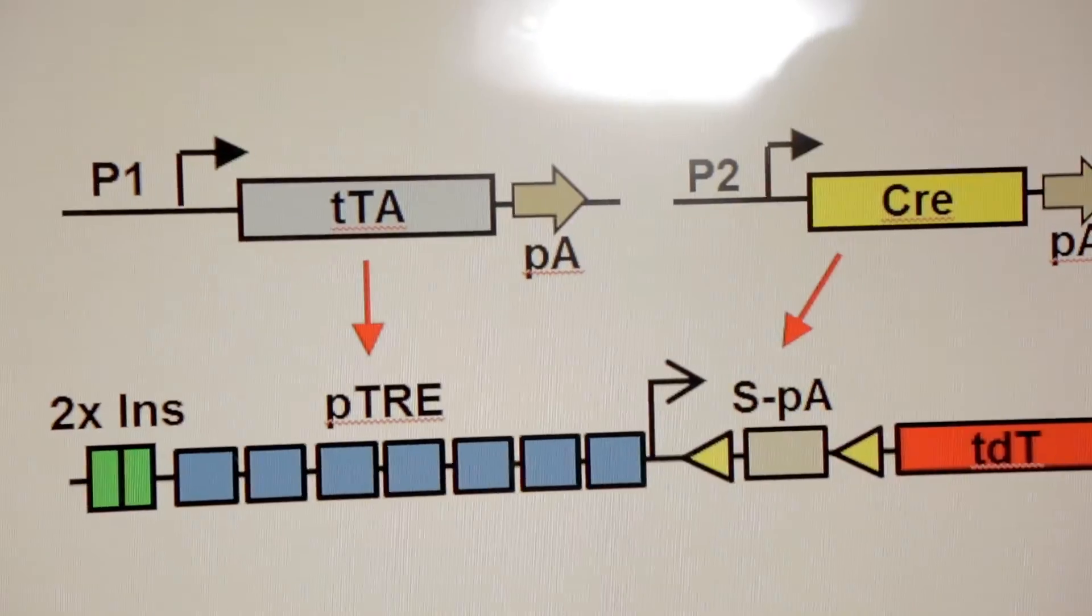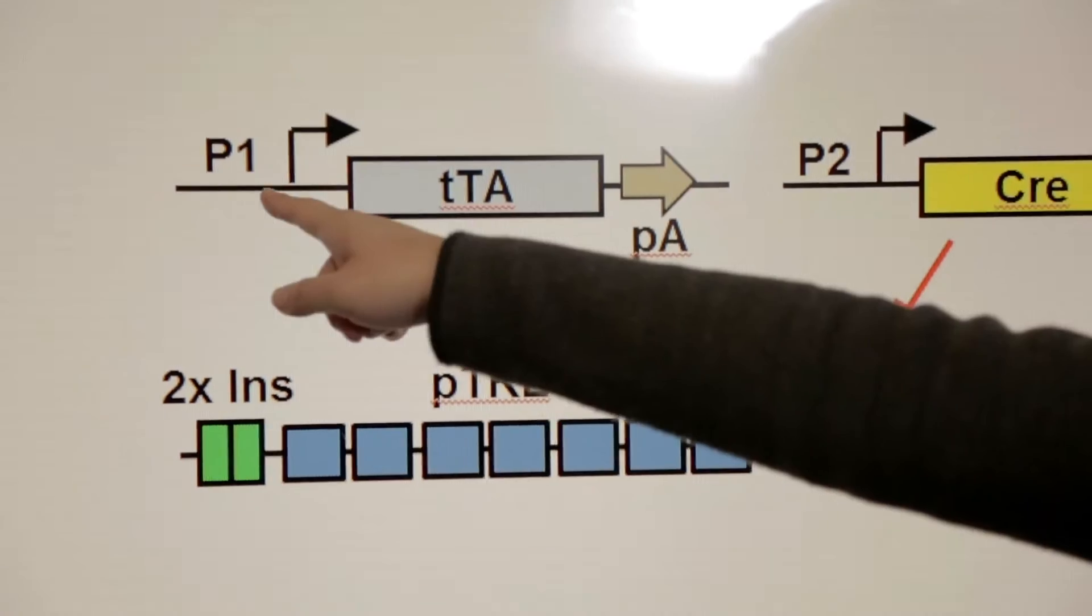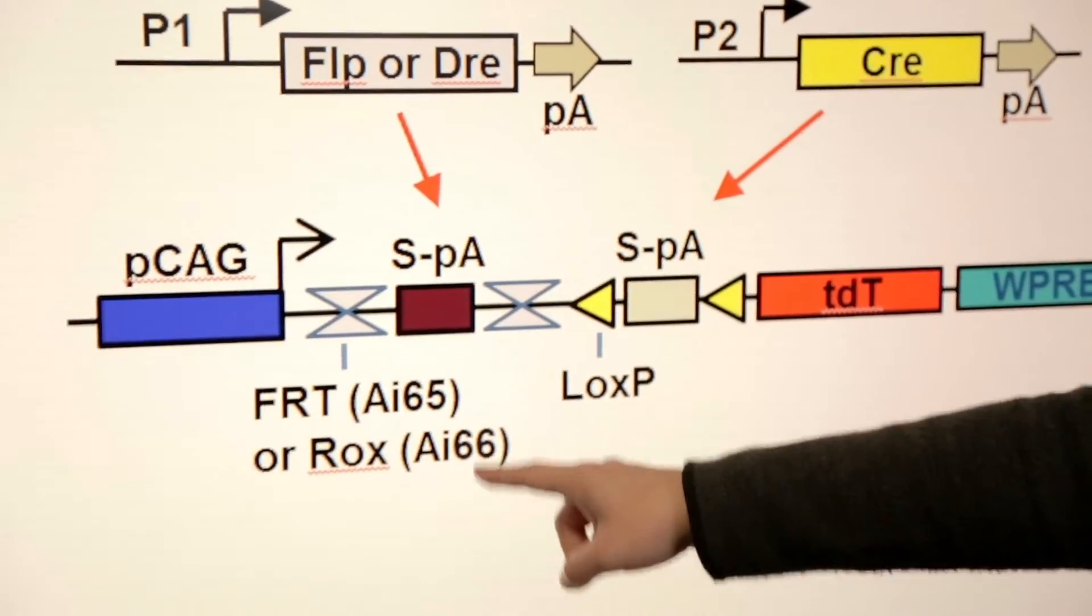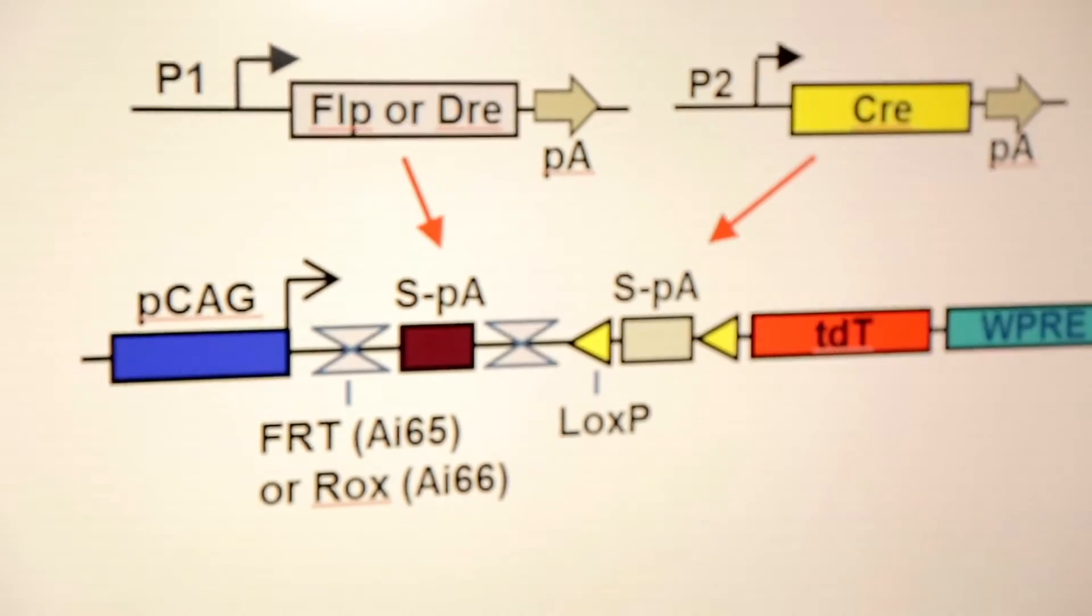For example, using the Gene 1 promoter to drive a Cre driver 1 and the Gene 2 promoter drives another recombinant such as a flip to create a flip driver 2, and then a double reporter that's dependent on both Cre and flip.